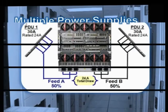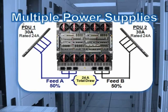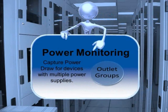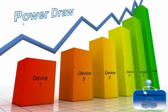Many servers and switches have multiple power supplies, and the ability to aggregate data from all of the power sources is important. PDUs that allow you to create power groups show you the power draw information for devices with multiple power supplies. By being able to chart the exact power usage of all of your devices, you can compare various servers and easily identify older, less efficient servers.